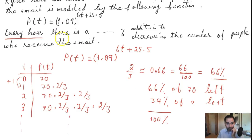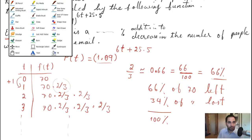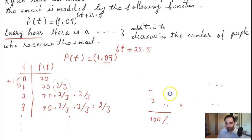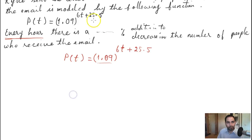Basically, this part of the question is related to the common ratio, which in this function is the number being raised to some power. Because the question asks about every hour, I need to rewrite this function in a different form so that I can answer what's happening per hour. In its current form, I cannot directly answer that question.